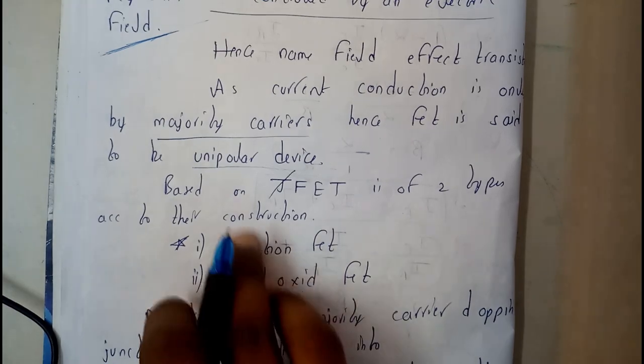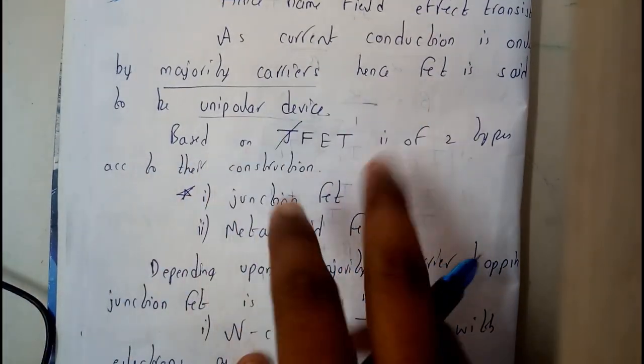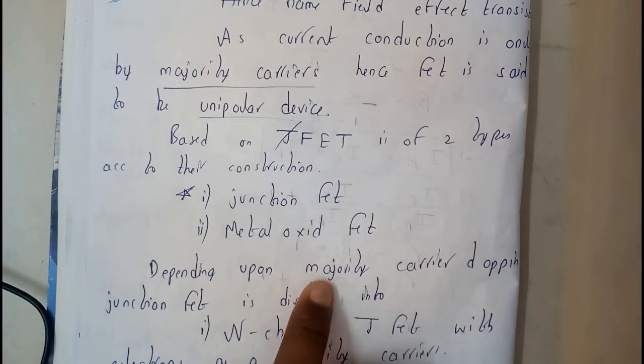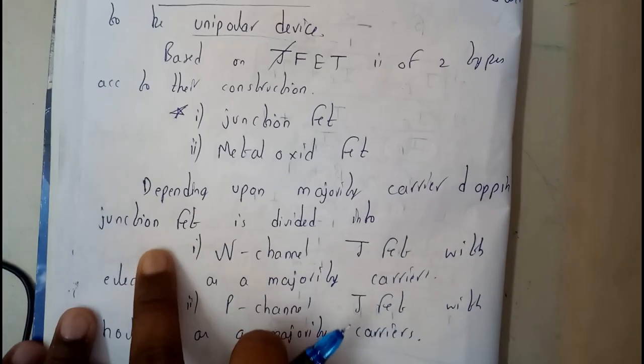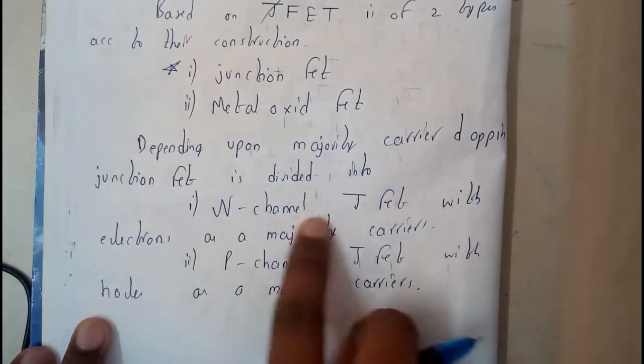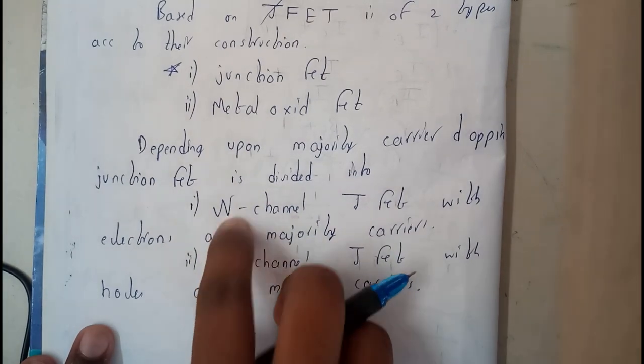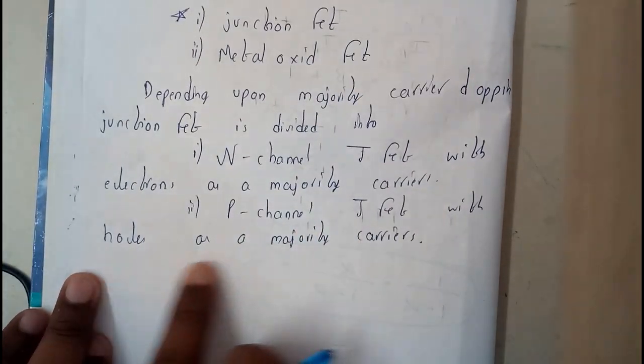Further moving on, based on the FET, those are divided and constructed in two types. One of them is junction FET, another one is metal oxide FET. Depending upon the majority carriers, these are further divided into two types: n-channel JFET with electrons as the majority carriers, and p-channel JFET with holes as the majority carriers.